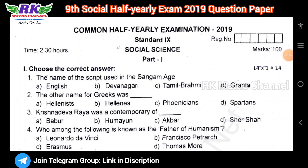Hi students, welcome to RKMS channel. This is the 9th class social science exam question paper — this is a 2019 question paper. You can see there are 4 more questions in this exam; 2 marks and 5 marks are needed. The blueprint and study plan should be uploaded.